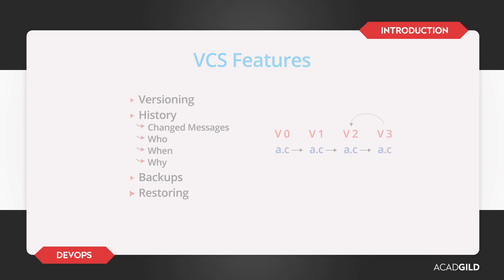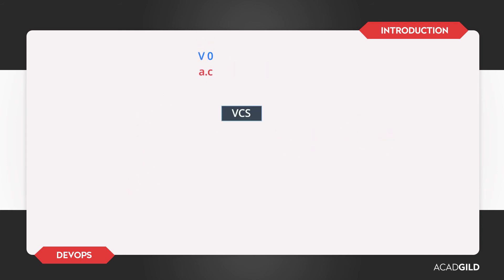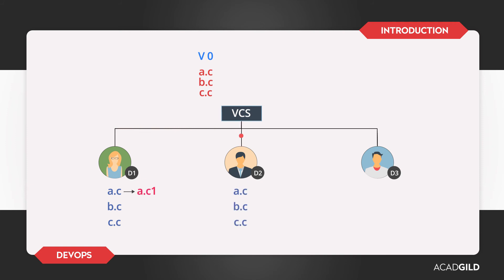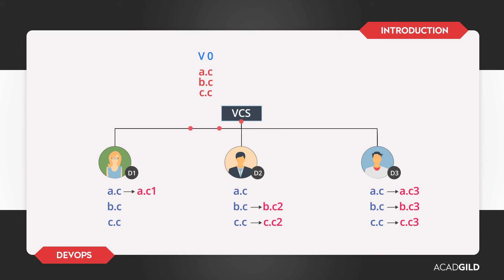Typically, a version control system works like this. You have a central server where the version control system is installed, on which you have your project files, and then you have your developers — Developer 1, Developer 2, and Developer 3. When Developer 1 wants to make any changes, he copies the files into his local system and changes AC to AC1. Developer 2 copies AC, BC, and CC and modifies them as BC2 and CC2. Developer 3 also copies AC, BC, and CC and makes changes to all files as AC3, BC3, and CC3. When these changes are done, Developer 1 copies AC1 into the version control system — AC becomes AC1, while BC and CC are not changed.